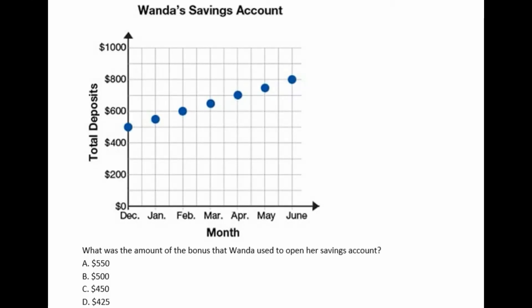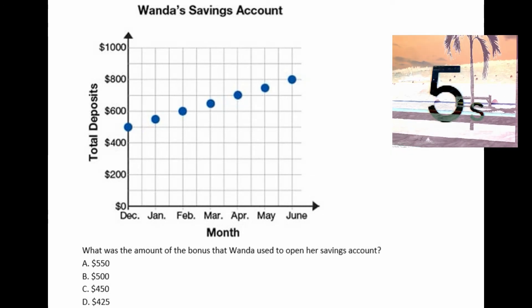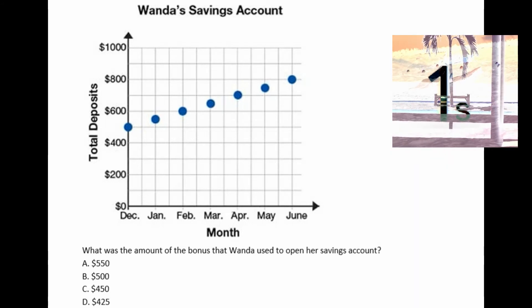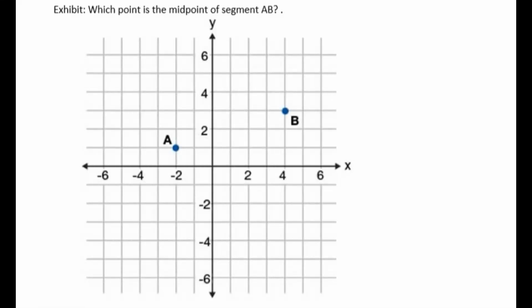The answer is letter C, $8. Next: Wanda's savings account — total deposits in dollars on the vertical axis and months on the horizontal axis. What was the amount of the bonus that Wanda used to open her savings account? Is it A: $550, B: $500, C: $450, or D: $425? The answer is letter B, $500.